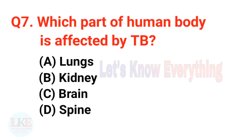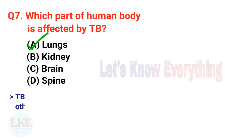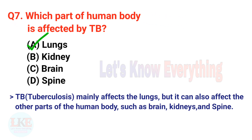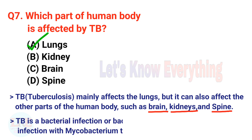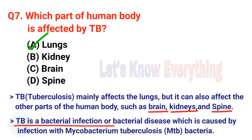Question number seven: which part of the human body is affected by TB? The right answer is option A, lungs. For more information, tuberculosis mainly affects the lungs, but it can also affect other parts such as the brain, kidneys, and spine. TB is a bacterial disease caused by infection with Mycobacterium tuberculosis (MTB) bacteria.